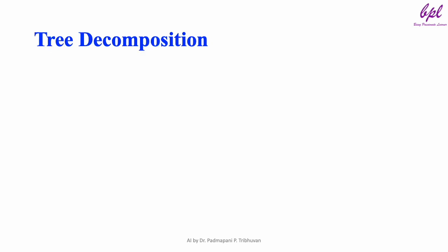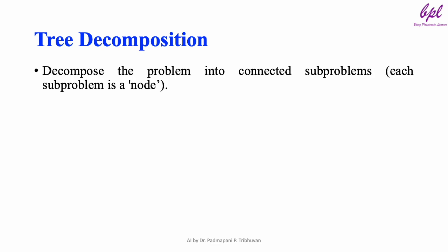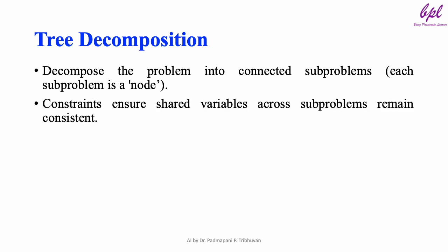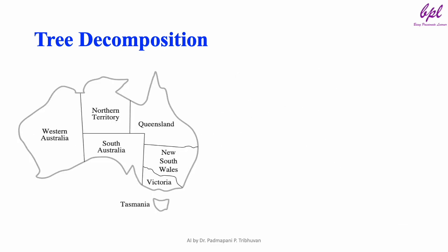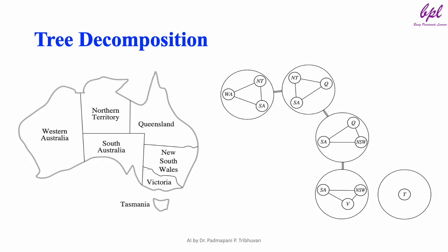Another way of converting a graph into a tree is tree decomposition. Tree decomposition involves breaking down a problem into smaller and connected subproblems. For example, the Australia map coloring problem can be split into several subproblems. Each subproblem has its own solution, and the shared variables must remain consistent across subproblems. This method can greatly reduce problem complexity.